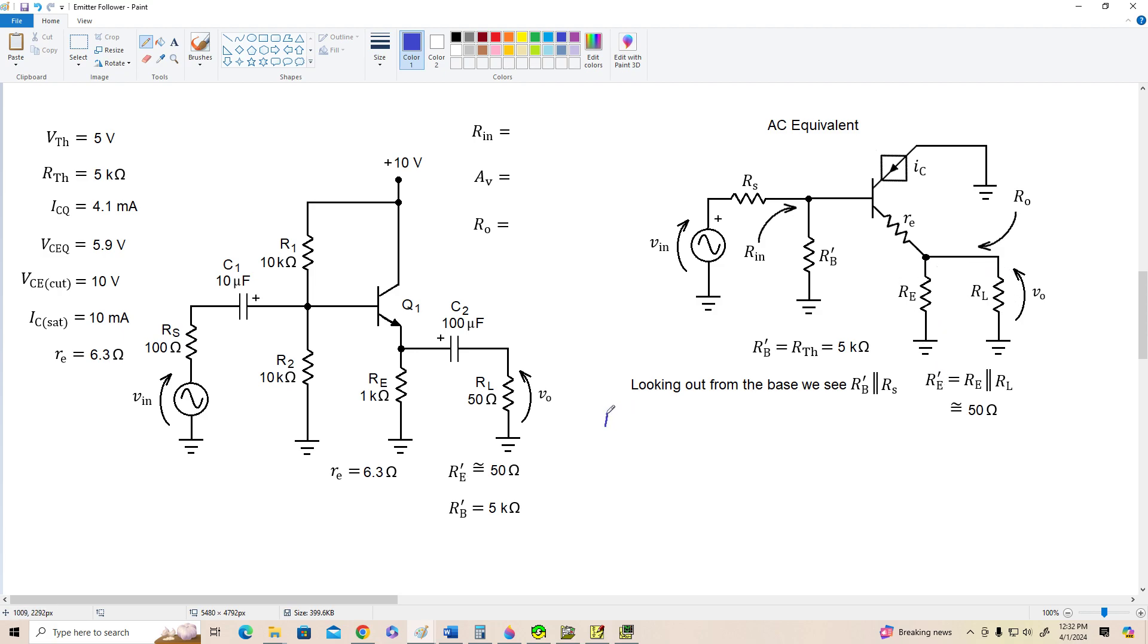So looking into the amplifier, we see R'B in parallel with beta times little RE plus the AC external resistance, R'E. So RN equals R'B in parallel with beta times little RE plus external R'E. That's the same equation that we got for the common emitter amplifiers that we've been looking at in the previous videos.